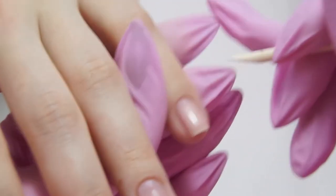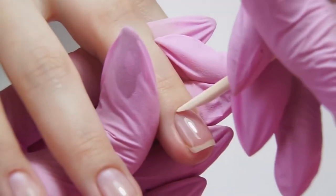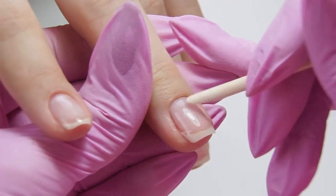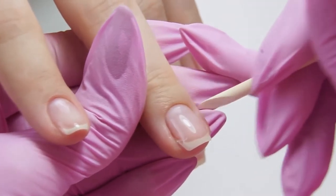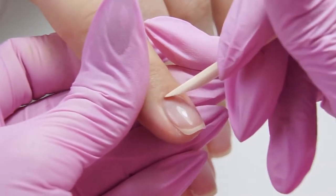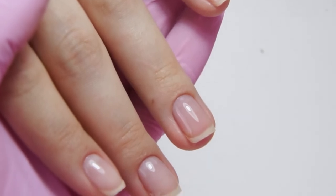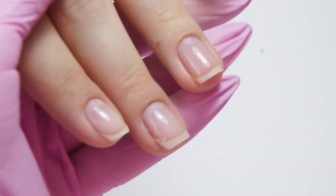After applying the base, I take an orange stick and push the cuticle, opening up its pocket. That way we can paint under the cuticle. If you notice any base leakage, try to remove it now. If the leakage has dried, then remove it with a nail drill.